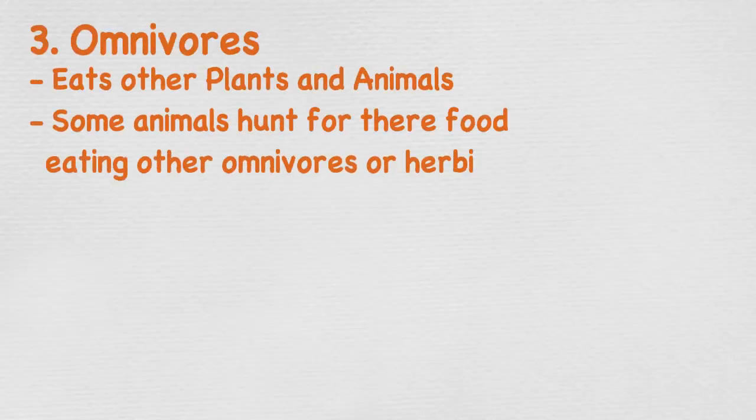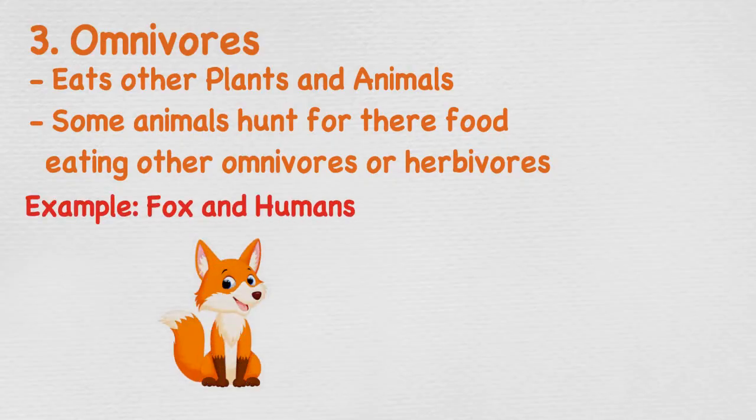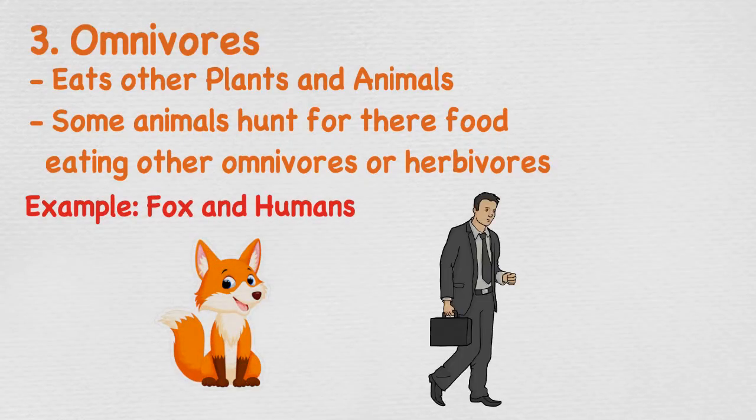Omnivores are a kind of animal that eats both other animals and plants. Some omnivores will hunt and eat their food, eating herbivores and other omnivores. An example is a fox, as its diet includes fruits, berries and grasses, but it also eats birds and small mammals like squirrels and mice.